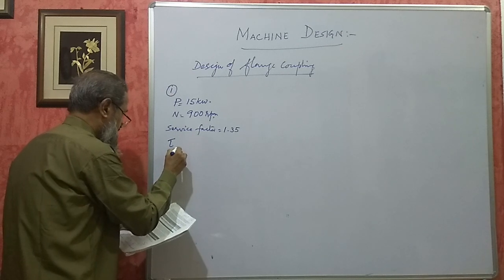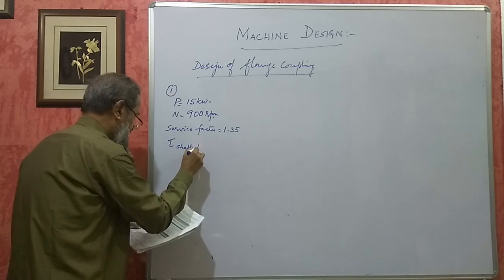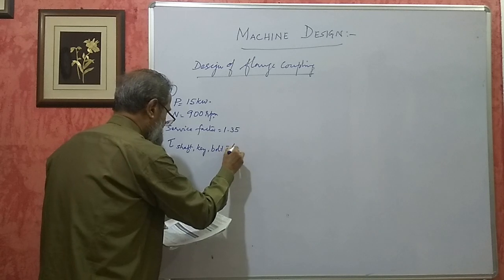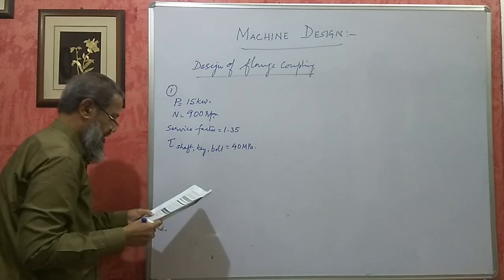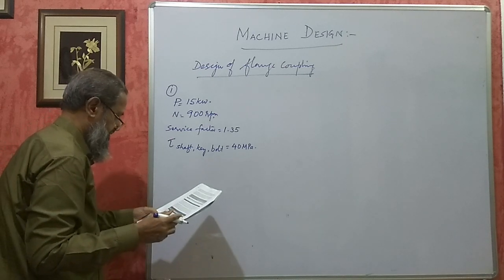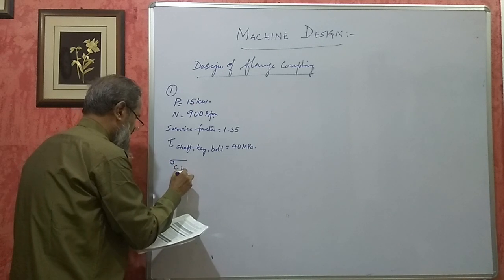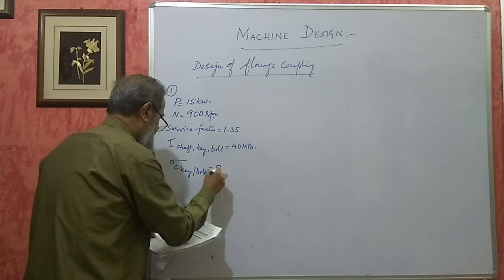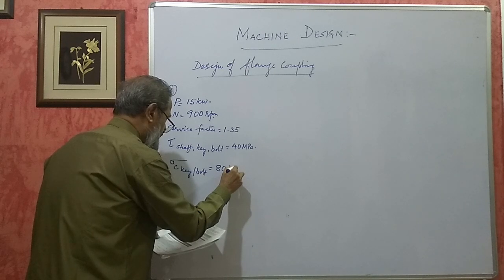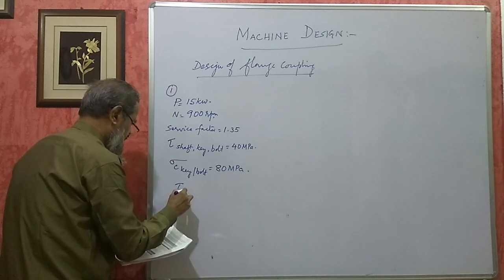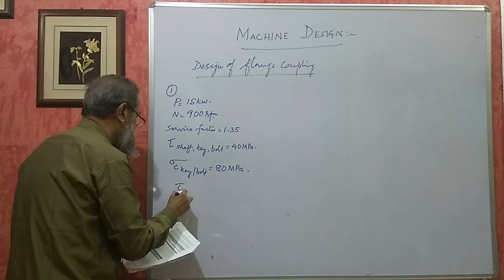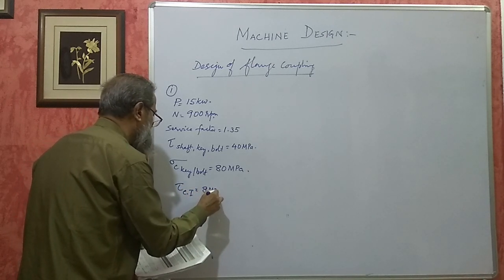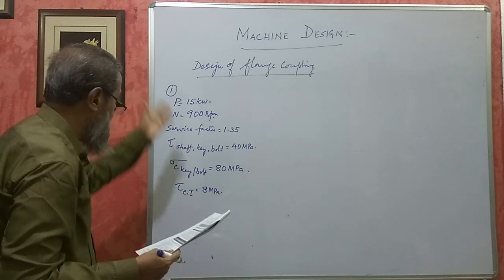Shear stress tau for shaft, key, and bolt — all three are made of the same material — so the shear stress for all of them is 40 MPa or 40 Newton per mm square. Crushing stress for key and bolt is 80 MPa. Shear stress for cast iron, that is for flanges, is 8 MPa or 8 Newton per mm square. With this data, design the coupling.